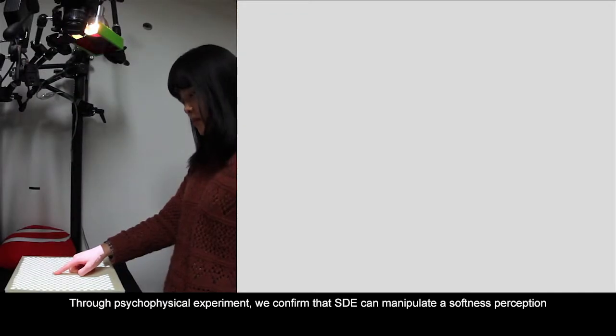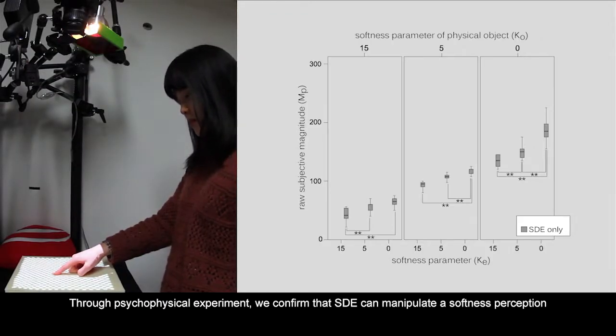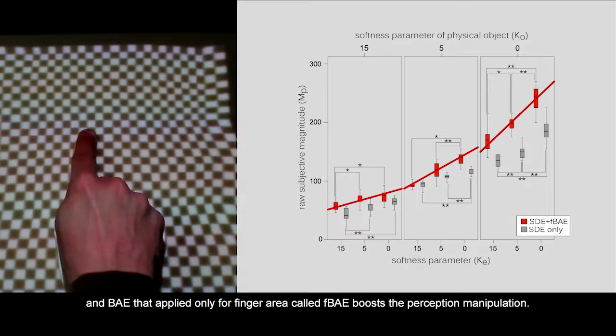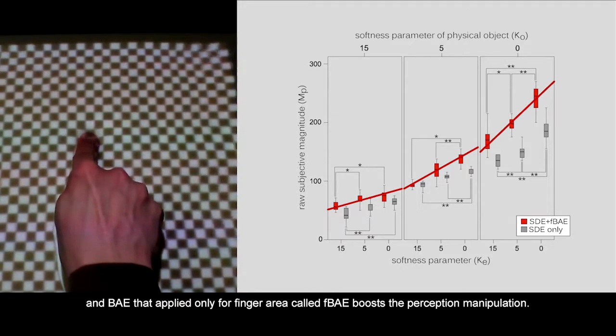Through psychophysical experiments, we confirm that SDE can manipulate softness perception, and BAE applied only for finger area, called FBAE, boosts the perception manipulation.